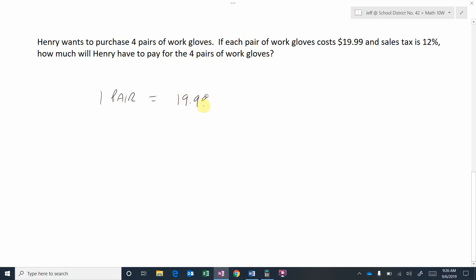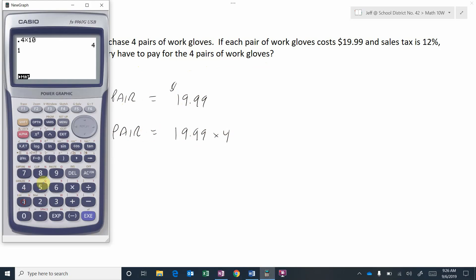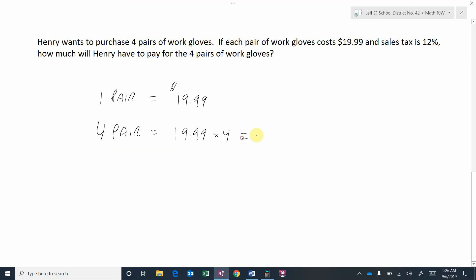Okay, so we know that one pair of gloves costs $19.99. He's going to buy four pairs, so that's going to be $19.99 times four, because he's buying four of them. So $19.99 times four is $79.96.